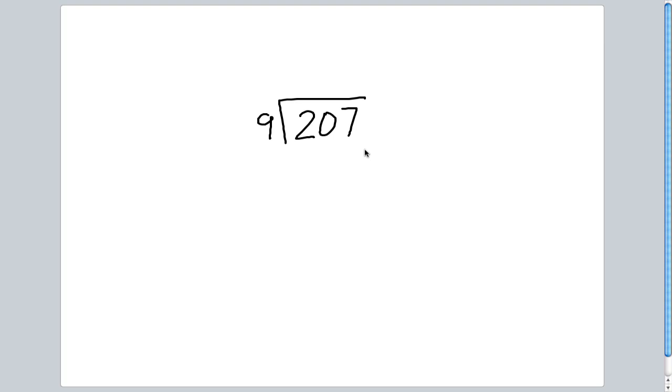In traditional division, you're immediately going to try and solve how many 9's are in the entire 207. But like partial sum, partial difference, partial product, we're actually going to solve this in parts.